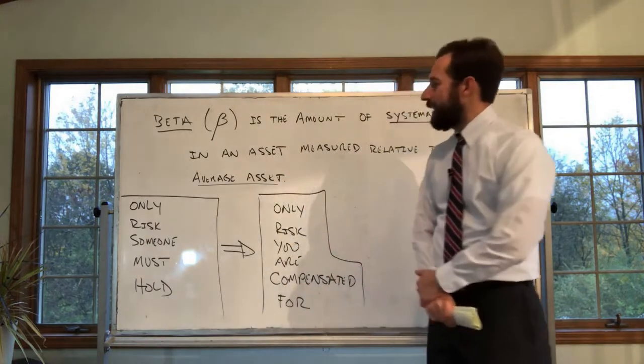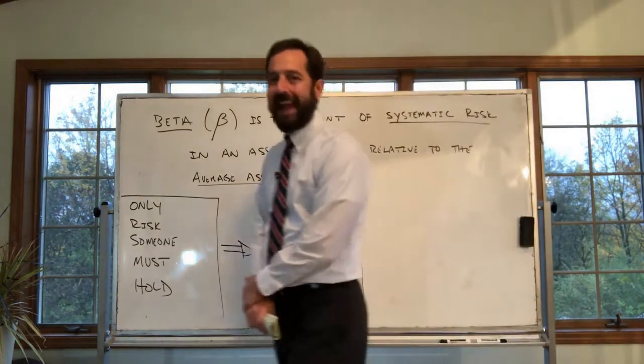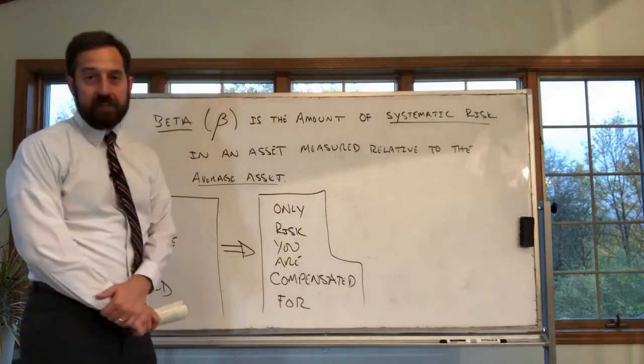What is beta? It's the amount of systematic risk in an asset measured relative to the average asset.